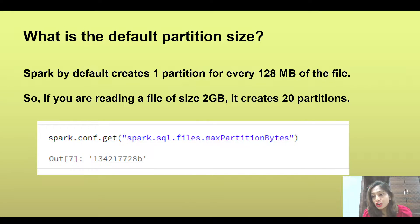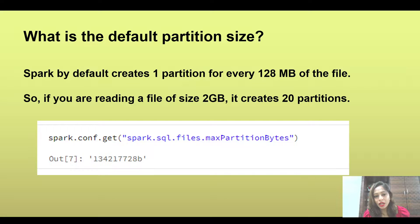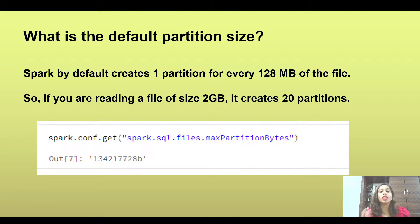The first question is: what is the default partition size in Databricks Spark? This is a very commonly asked question. The straightforward answer is that Spark by default creates one partition for every 128 MB of file, meaning each partition is 128 MB in size. This question can also be asked the other way — for example, if you are reading a file of 2 GB, how many partitions will it create?